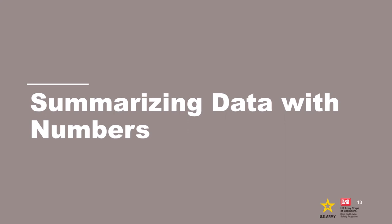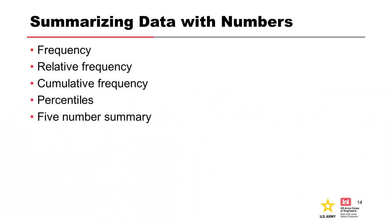Now let's get into actual analysis — how we summarize data with numerical summaries. This doesn't cover everything, but these basics provide a good foundation. We're talking about five different ways to summarize data: frequency and relative frequency, cumulative frequency, percentiles, and a five-number summary. All of these are aimed at simple metrics we can apply to any data set to make inferences and judgments.